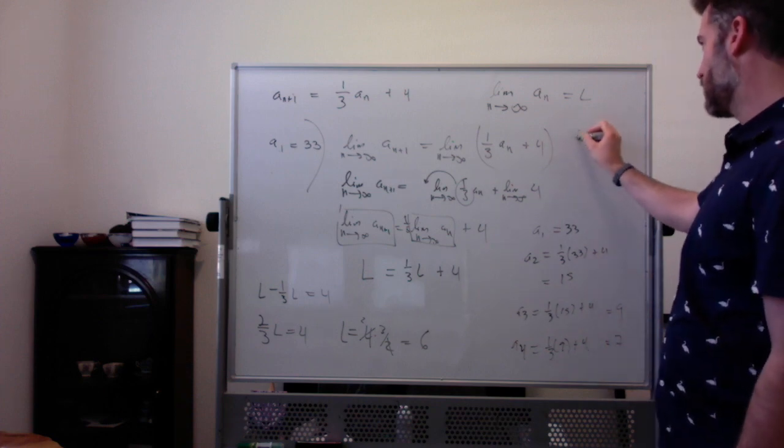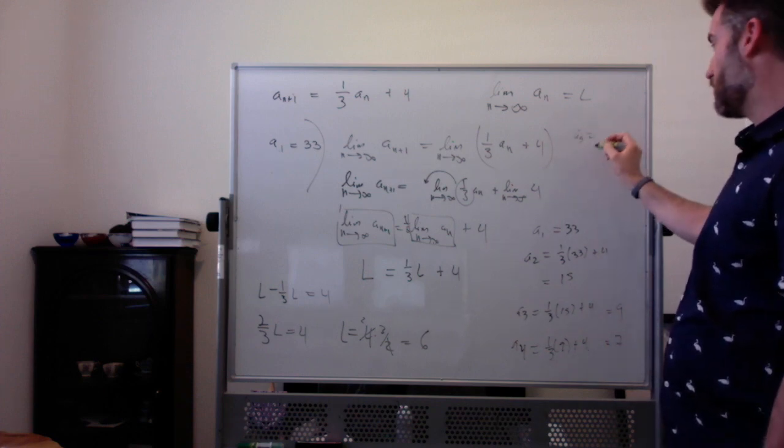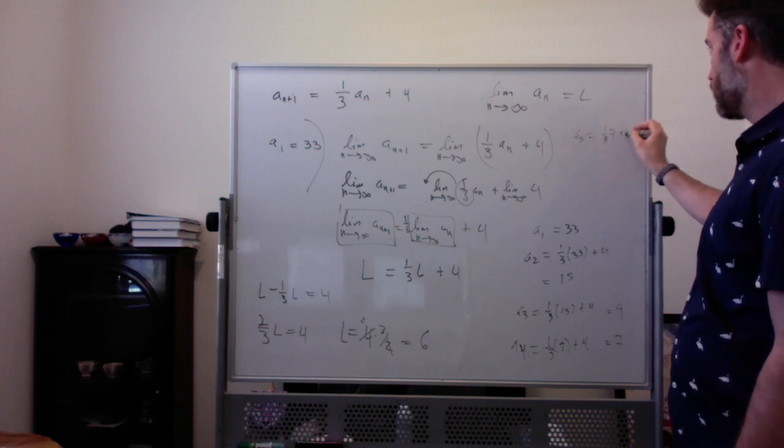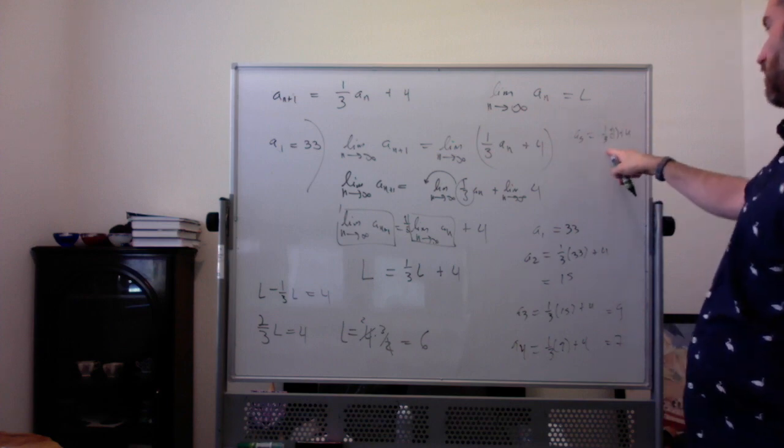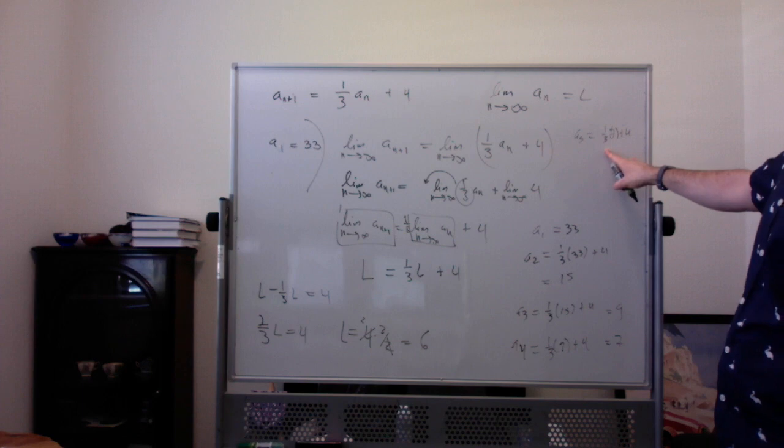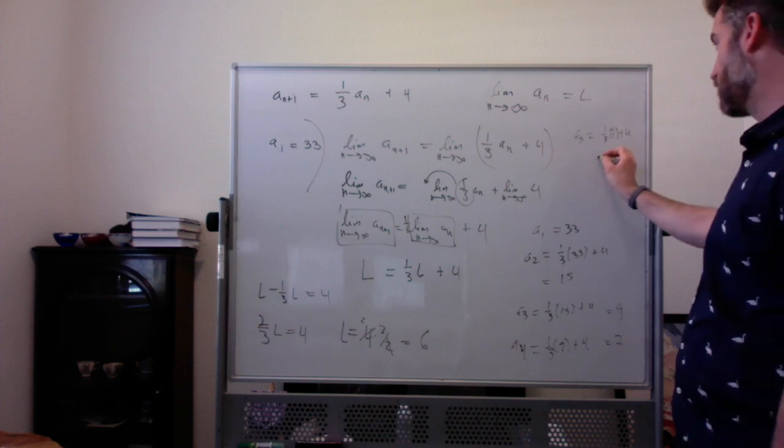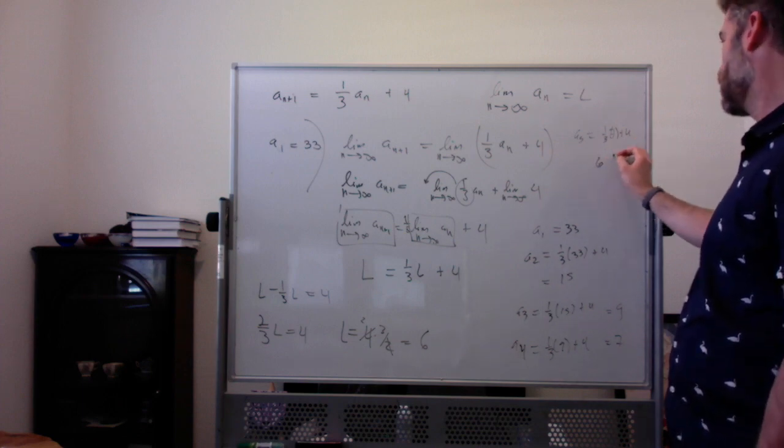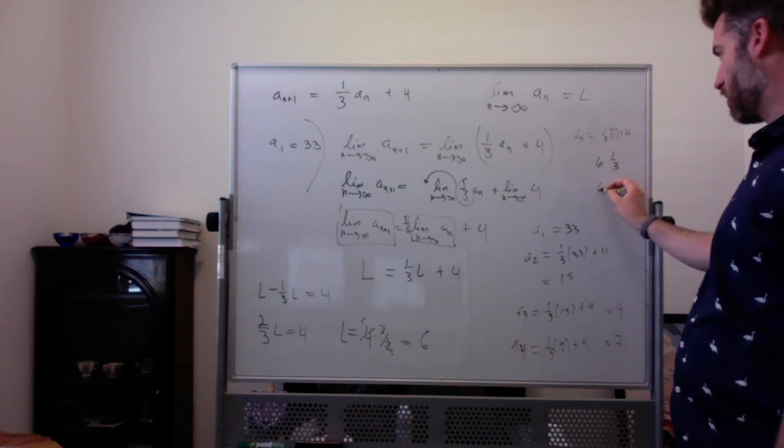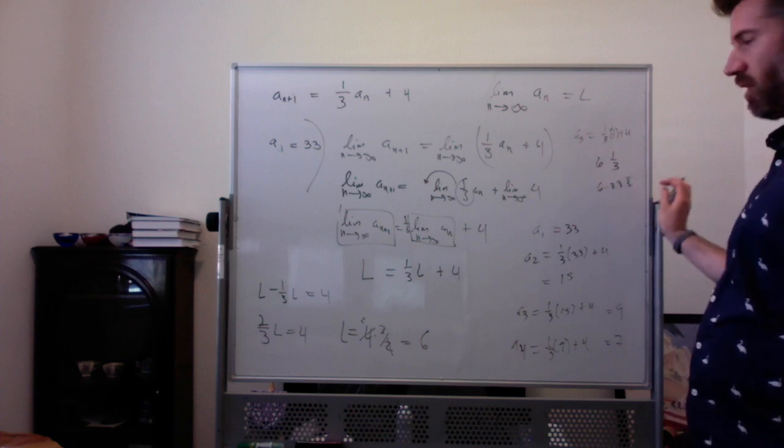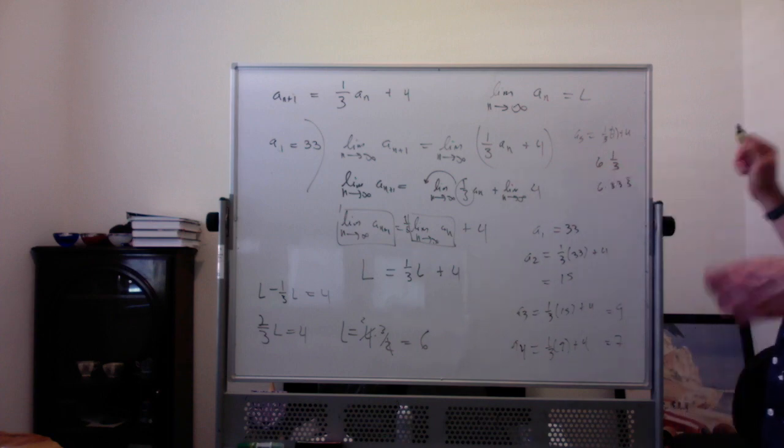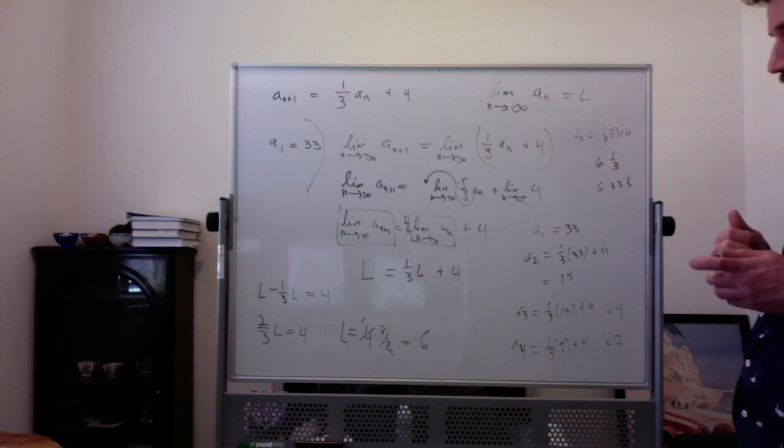And then the numbers start to get messy. A5 is 1 third of 7 plus 4, which is 7 thirds plus 4, which is 6 and 2 thirds, which I would normally not write this way, 6.33. And then it's going to get worse after that. But the idea is, oh yeah, look, our numbers are getting closer and closer to 6. So the limit is 6.